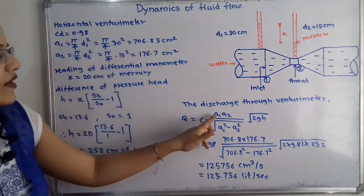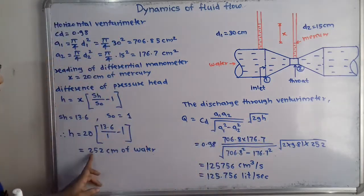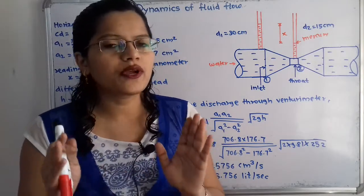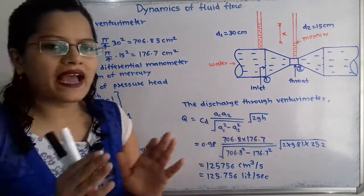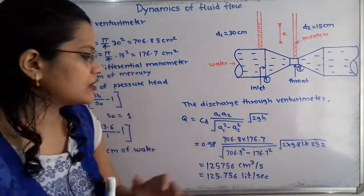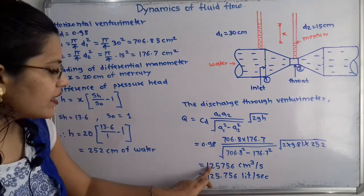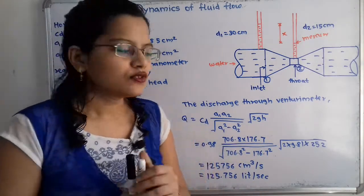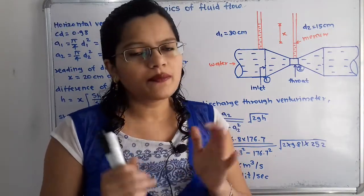We now have all required values: a1, a2, Cd = 0.98, g = 9.81, and h = 252 centimeter. All values are in centimeters, so units are consistent. Substituting into the discharge formula and calculating, we get the discharge Q equal to 125756 centimeter cube per second.